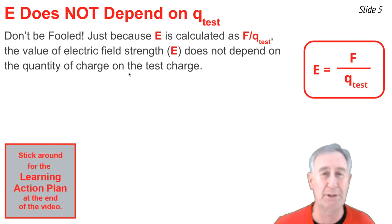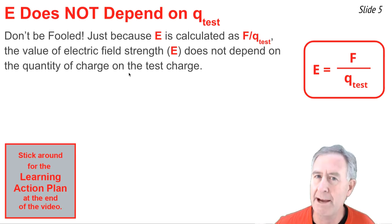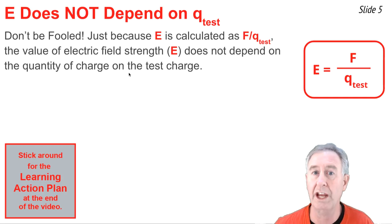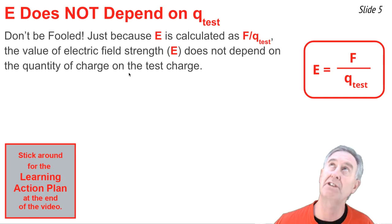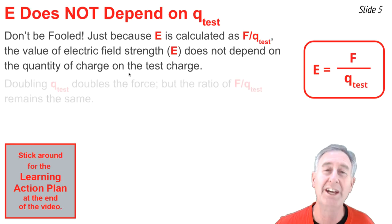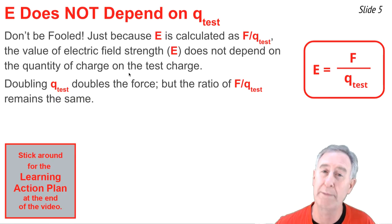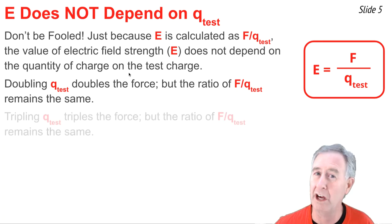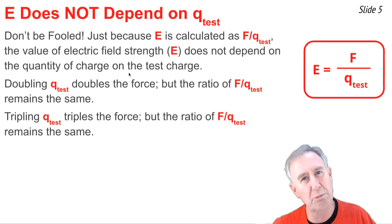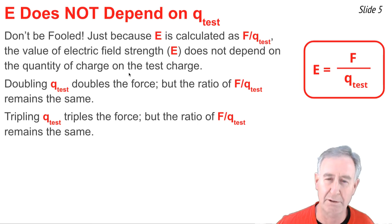Don't be fooled — the electric field does not depend upon the quantity of charge on the test charge. Just because we calculate electric field as the ratio of F per q does not mean that changing the quantity of charge on the test charge will change the electric field. If you were to change the denominator on the right side of the equation, it would affect the numerator as well. Doubling the quantity of charge on the test charge doubles the force, and the ratio of force per q remains the same. Tripling the denominator triples the numerator, and the overall ratio remains the same — so the quantity of charge on the test charge does not affect the electric field value.